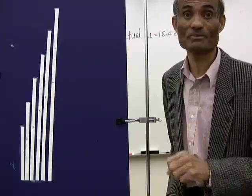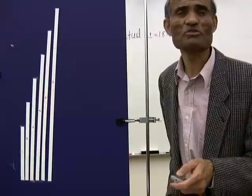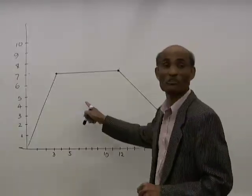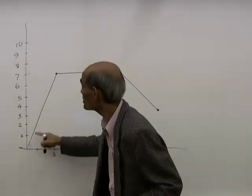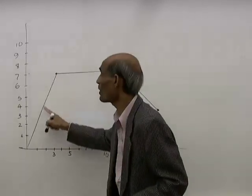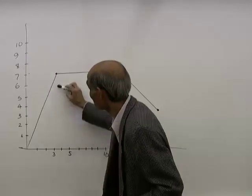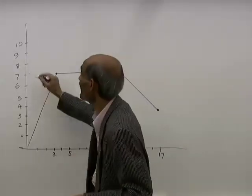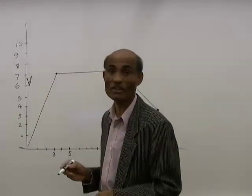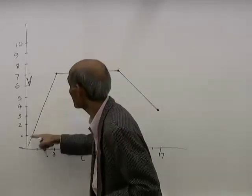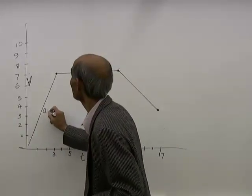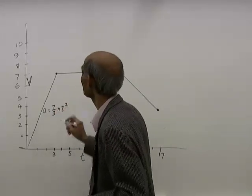Now there are some questions. I want to touch on one of those questions to give you a hint. This is the graph given to you in that question. What is the acceleration of the object from time t equal to 0 to t equal to 3? That is the slope of this line. The slope will be the change in velocity — this is a graph of v against t, velocity against time. The slope is 7 meters per second divided by 3 seconds, so the acceleration is 7/3 meters per second squared.